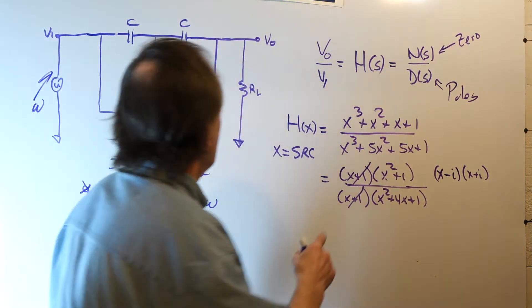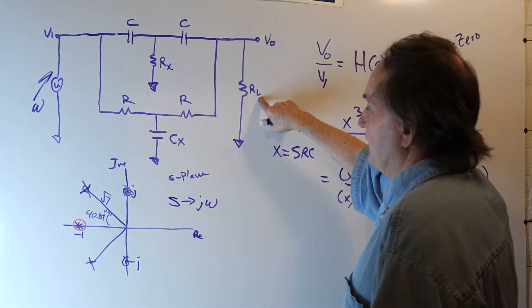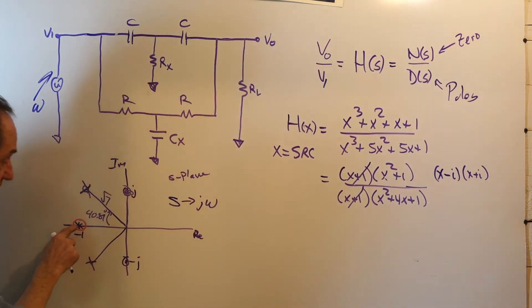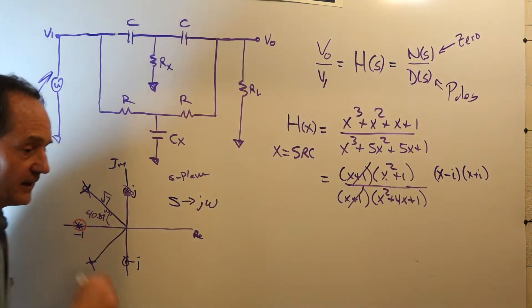Now, when RL is not infinite, what happens is the pole and the zeros move apart. The zero is always at minus 1, but the pole moves away, so you don't end up with cancellation.